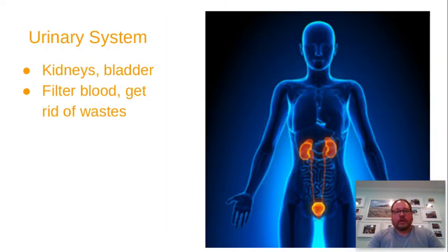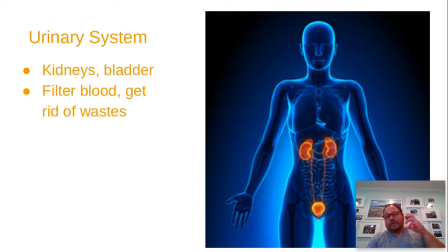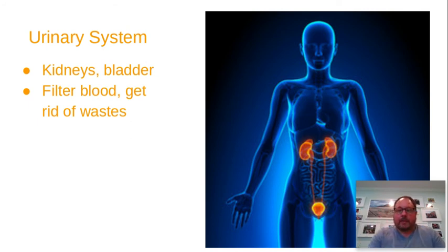Your urinary system. You've got five liters of blood collecting waste from 10 trillion cells, so your blood can literally start to become toxic. Your kidneys actually filter your blood — every couple of minutes, your kidneys filter all the blood in your body, removing waste and storing it in your bladder as urine, which then gets expelled outside the body.